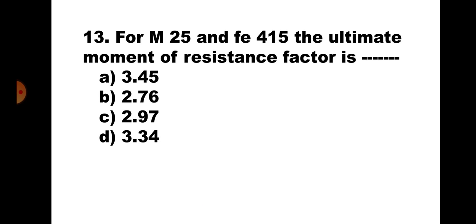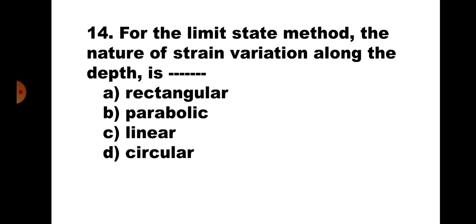Question number thirteen: For M35 and Fe 415, the ultimate moment of resistance factor is — (a) 3.45, (b) 2.76, (c) 2.97, (d) 3.34. For Fe 415, Mu,lim = 0.138 × fck × b × d², where 0.138 × fck is the moment of resistance factor. With fck = 25: 0.138 × 25 = 3.45. The correct answer is (a) 3.45. Similar questions can be made for other steel-concrete combinations.